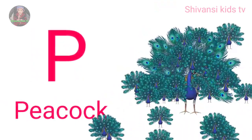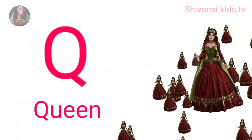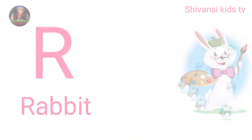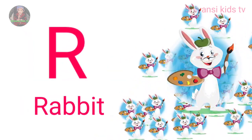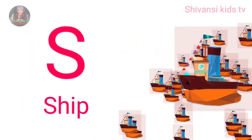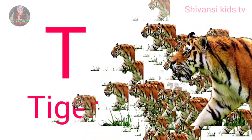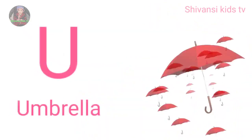P for peacock, Q for queen, R for rabbit, S for sheep, T for tiger, U for umbrella.